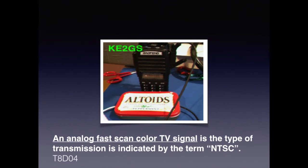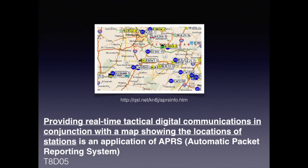Fast scan TV is an interesting concept. Here is a photograph of a slow scan TV broadcast that I provided as a demonstration to a group years ago. For the exam, you need to know that an analog fast scan color TV signal is a type of transmission indicated by the term NTSC. Providing real-time tactical digital communications in conjunction with a map showing the locations of stations is an application of APRS — Automatic Packet Reporting System.